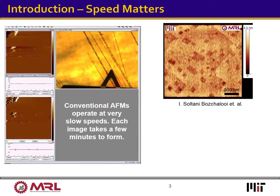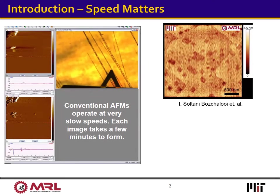The video on the left shows operation of a conventional atomic force microscope. The sample is moved back and forth with respect to a probe, and an image of the sample surface is formed line by line. Although very precise, such systems rely on how fast we can move the probe or the sample, and as a result, are very slow.